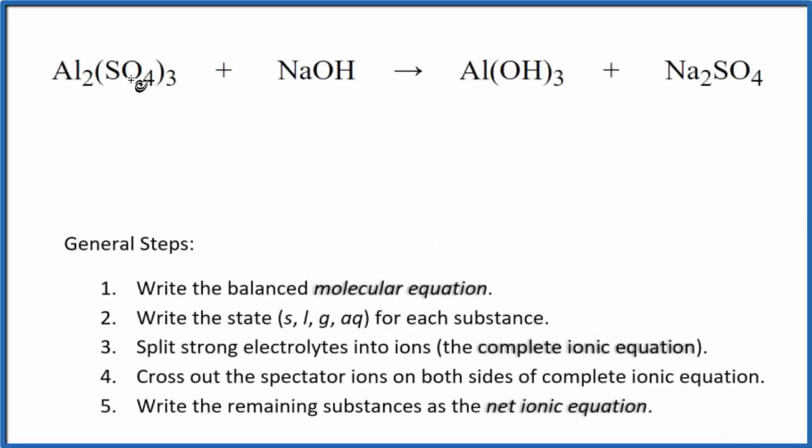In this video we'll write the balanced net ionic equation for aluminum sulfate plus sodium hydroxide. The first thing we need to do is balance the molecular equation. I can see I have three sulfates here and only one over here.